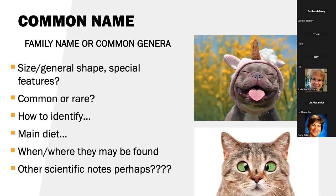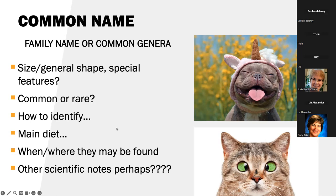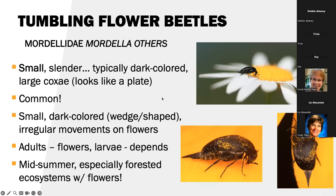The next few slides — how I organized this: I put the common name, top, bold, for you to help identify some beetles you might encounter. Then I have the family name or common genera. Then I get into descriptions of these beetles with photographs on the right. We'll cover size, general shape, special features, whether they're common or rare, how to identify it, their main diet — split between larvae and adults — and then when and where they may be found, and some other scientific notes.